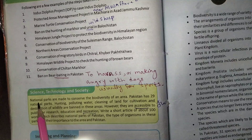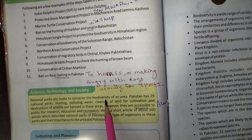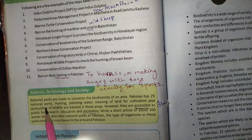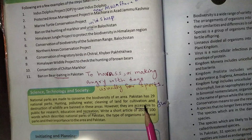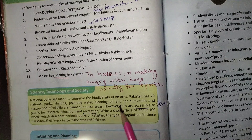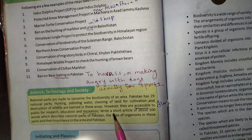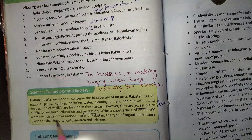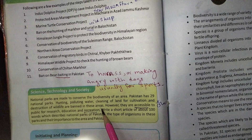Students, national parks are meant to conserve biodiversity over a large area. Pakistan has 29 national parks. In these areas, hunting, polluting water, and clearing land for cultivation are all prohibited. Destruction of wildlife is also strictly banned in these areas. However, the public has access to all these national parks for the purposes of research and education.